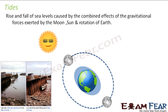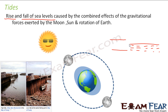Let us see what tides are. Tides are nothing but the rise and fall of sea levels caused by the combined effects of the gravitational forces exerted by the moon, sun, and rotation of the earth. When the level of the sea increases, we call it a high tide. When the sea level decreases, we call it a low tide.